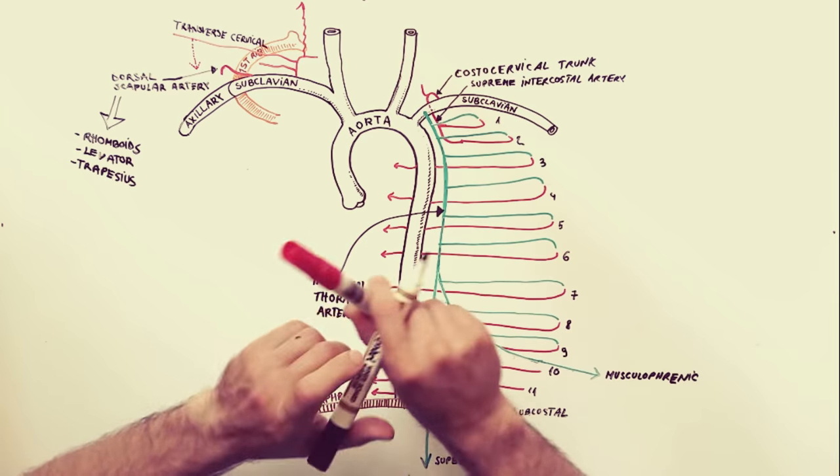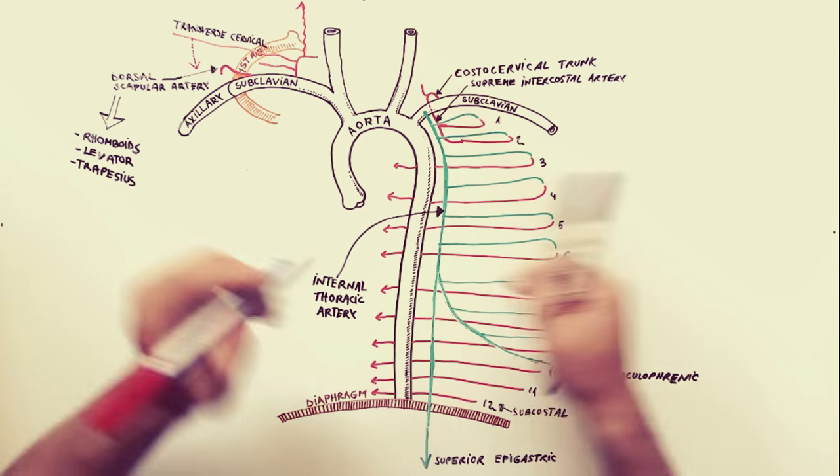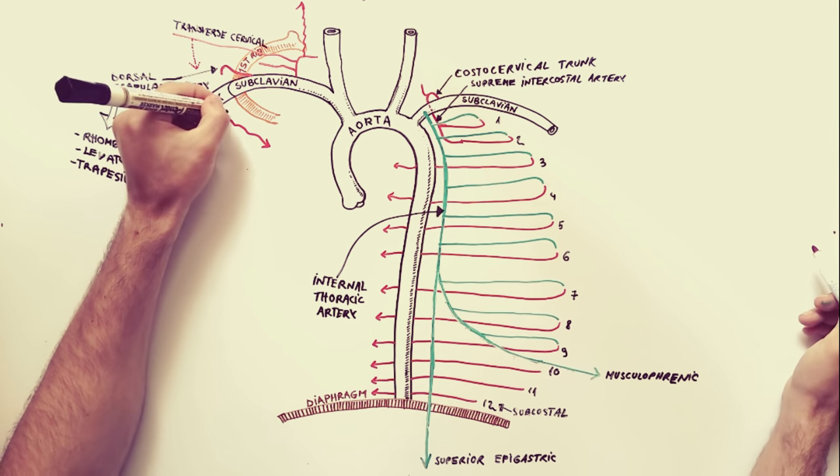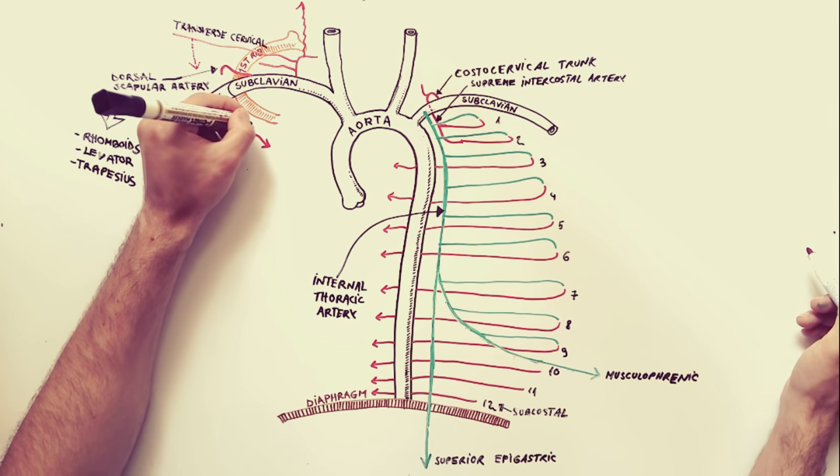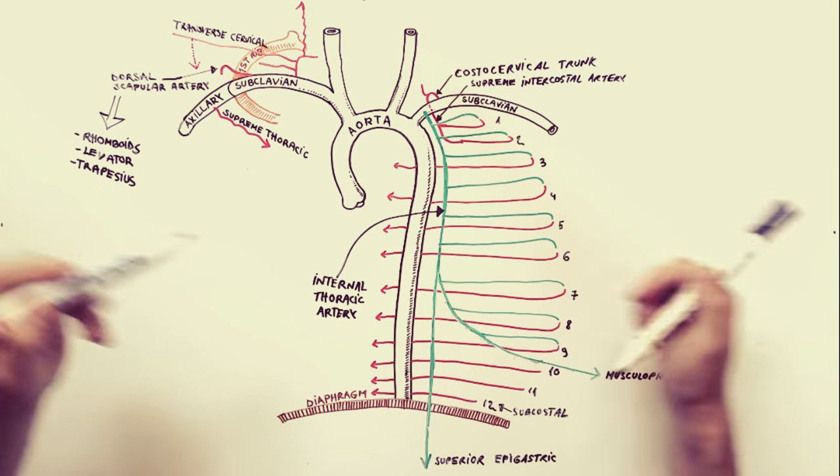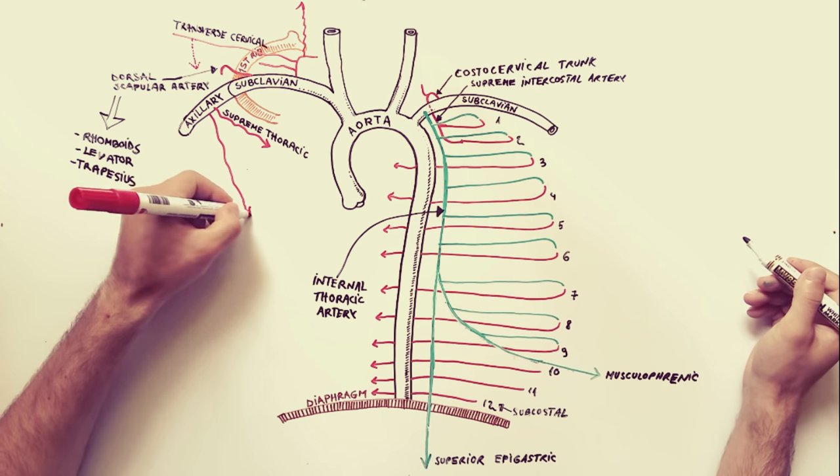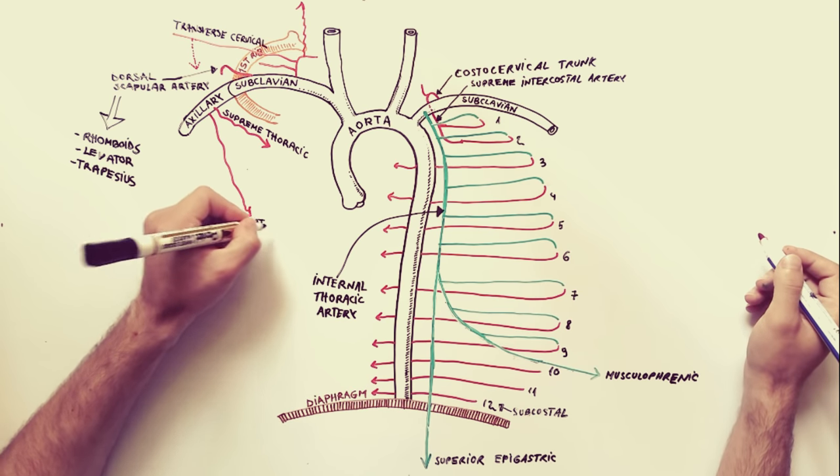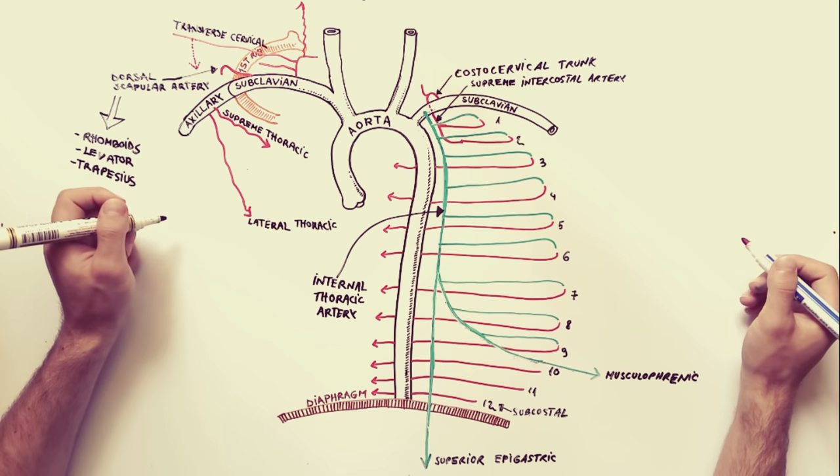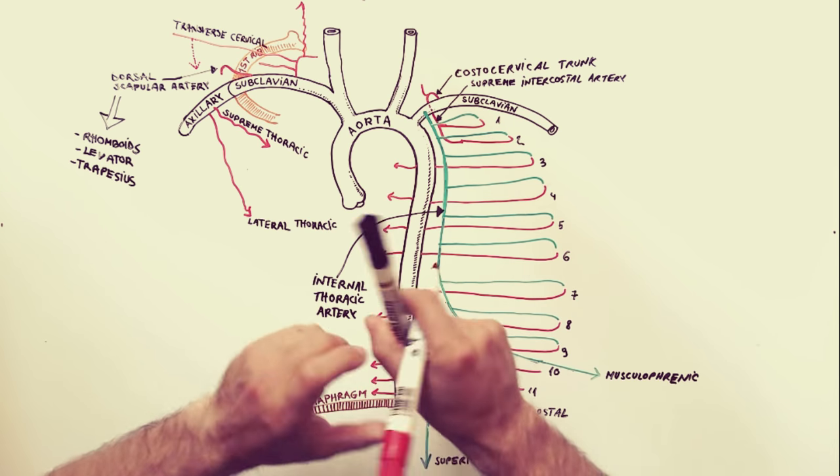Lastly, we will indicate the branches from the axillary artery. Those branches will supply mostly the lateral part of the thoracic wall. The supreme thoracic artery, or the superior thoracic artery, supplies branches to the first and second intercostal spaces as well as to the superior portion of serratus anterior.